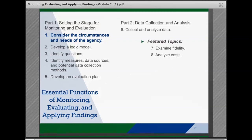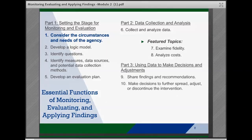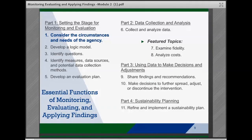Part 2 is collect and analyze data, and it includes strategies to put the evaluation plan into place by collecting and analyzing the data outlined, and then two special featured topics: examining fidelity and analyzing costs. Part 3 outlines how to use the data collected to make decisions and adjustments, with two functions on sharing findings and recommendations, and then making decisions to further spread, adjust, or discontinue. And Part 4 is on sustainability planning, and how teams should refine and implement a plan to sustain interventions when this is the decision of the team and stakeholder groups.